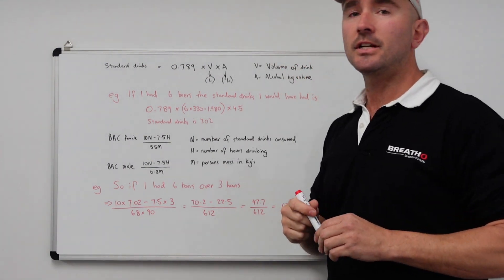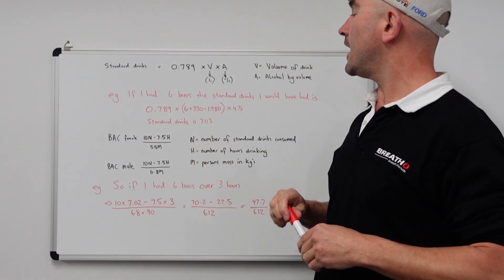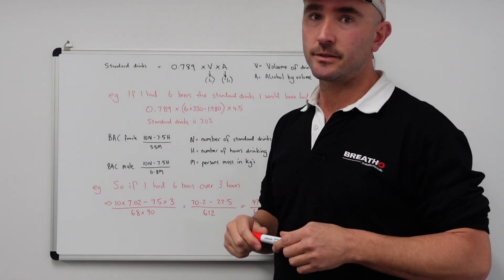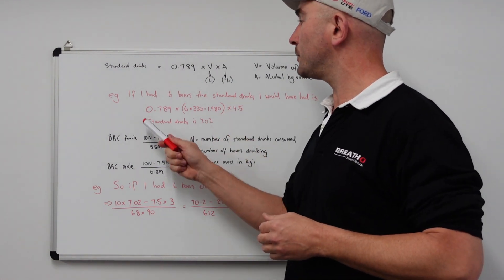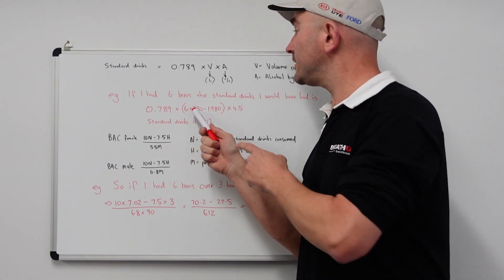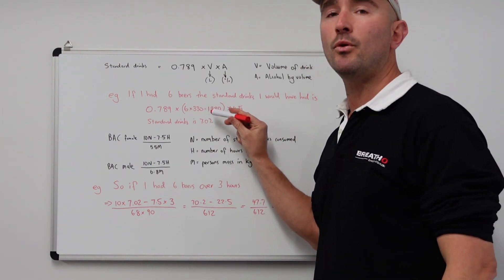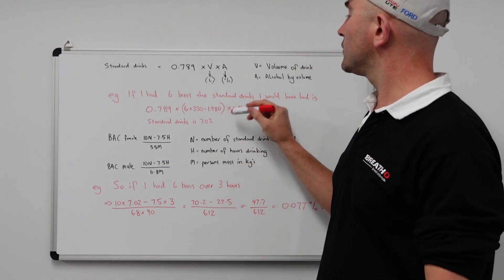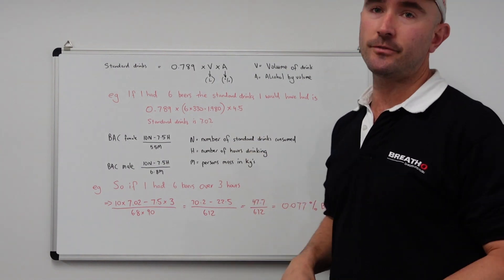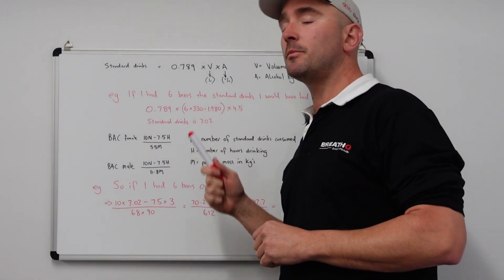So let's do a quick example. Say if I've had six beers, what would be the standard drink that I've had over those six beers? It would be 0.789 times the six beers at 330 mils, which equals out to be 1.98 liters times 4.5, which is the percentage of that beer. So that works out to be a standard drinks total of 7.02.